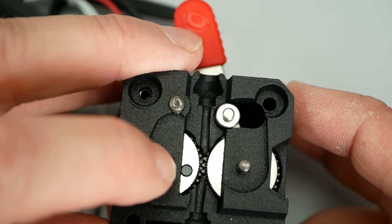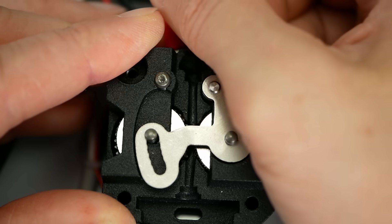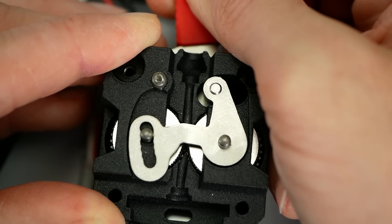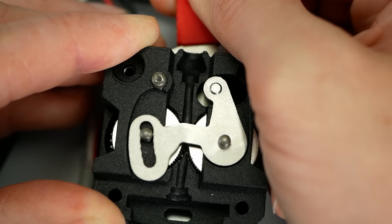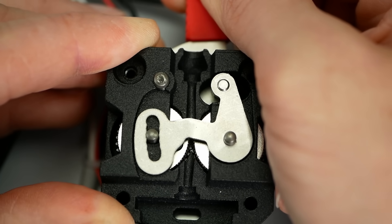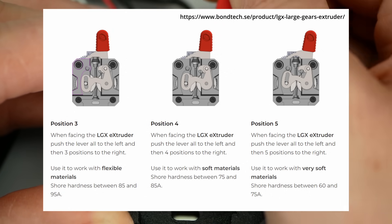Here you don't adjust the tension on the filament, but the gap between the extruder gears. The gears are disengaged for loading and unloading the material in the first level position. Setting 1 is where the gears are the furthest apart from each other, recommended for PLA and other non-flexible materials. Setting 2 to 5, where the gap constantly decreases, is for increasingly soft materials.